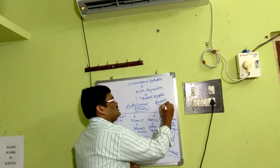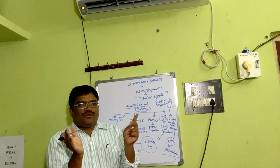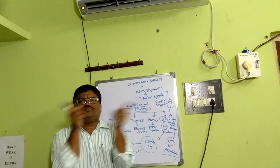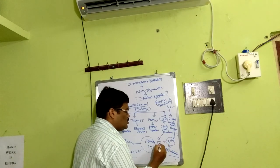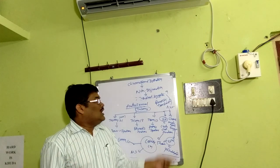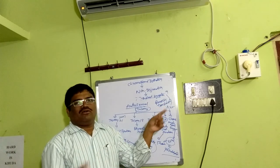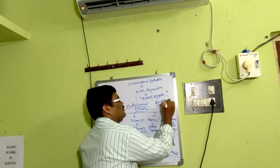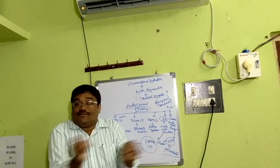Chronic myelogenous leukemia results from reciprocal translocation between chromosomes 9 and 22. A part of chromosome 9 and chromosome 22 are exchanged. This creates an abnormally short chromosome 22 — called the Philadelphia chromosome — and an abnormally long chromosome 9. The Philadelphia chromosome leads to tyrosine kinase activation and uncontrolled cell proliferation, causing leukemia.